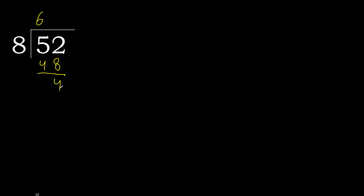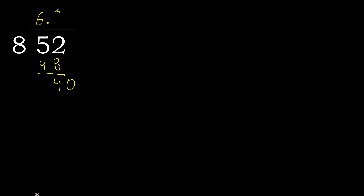Subtract, remainder 4. There is no number, therefore complete — always complete with 0. 0 point, complete point. 40 ÷ 8, multiply by 5: 40 is not greater. Subtract 0. 0, therefore finish it.